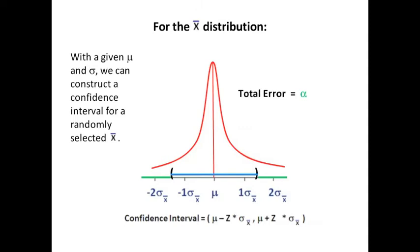It is μ minus so many standard deviations of the x̄ distribution below the mean and μ plus so many standard deviations of the x̄ distribution above the mean.